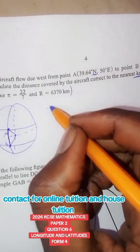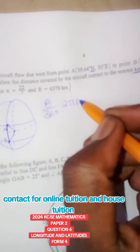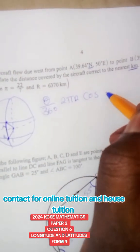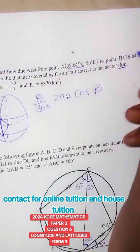So we are going to say that length equals theta over 360 times 2πr cos beta. Let me call it angle beta.